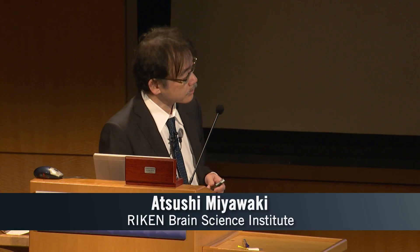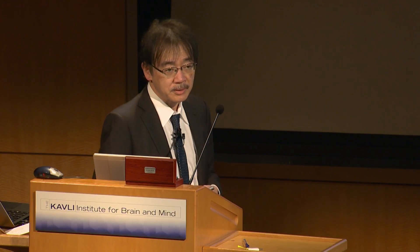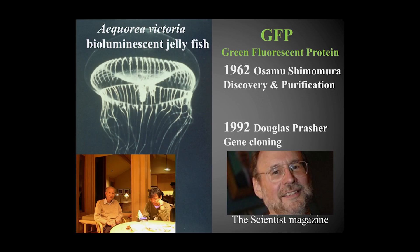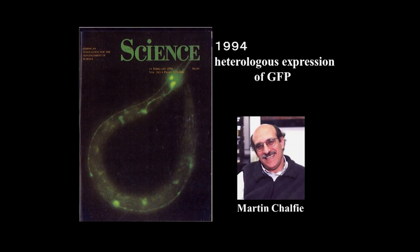My laboratory is engaged in technological innovation in bio-imaging, principally using fluorescent proteins. I'd like to introduce the most classical fluorescent protein — GFP. A long time ago, in 1962, Osamu Shimomura discovered a protein from the light-emitting organ of jellyfish. Just 30 years later, in 1992, it was cloned. And in 1994, heterologous expression of E. coli GFP was achieved by Marty Shorty at Columbia.